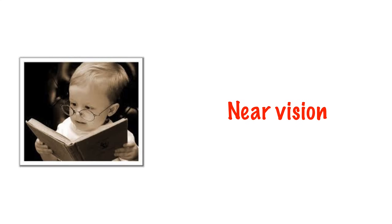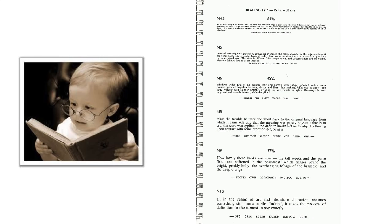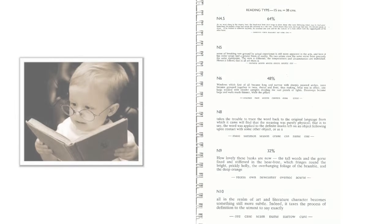Once the right eye has been tested, repeat all steps with the left eye. Another thing to test is near vision — give the patient a near vision chart and, holding it at normal reading distance, ask them which is the easiest print to read. N8 is the size of newsprint.